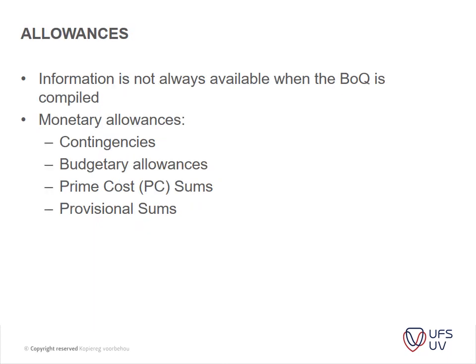Information is not always available when BOQs are compiled, so monetary allowances are used — usually in the forms of contingencies, budgetary allowances, and prime cost sums. Prime cost sums are the basic cost of items — for instance, what a standard hollow core door from a manufacturer actually costs. You then allow an item underneath for the contractor to mark up installation costs.